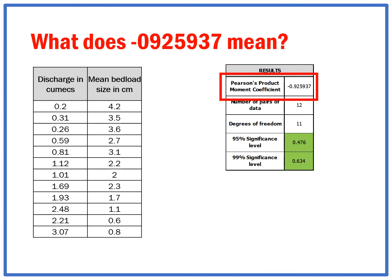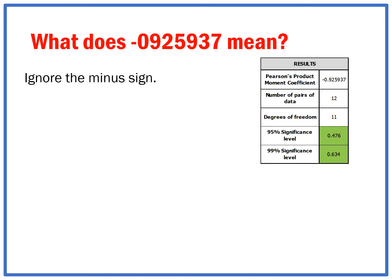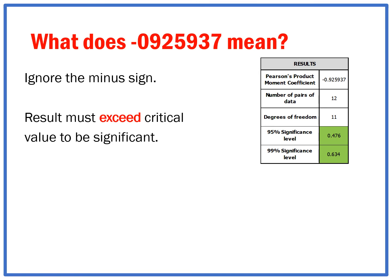So what does this result actually mean? I've got 12 sets of data, 11 degrees of freedom, and both boxes turned green. If I had my graph here of perfect negative relationship and perfect positive relationship, my result falls almost at a perfect negative relationship. That means as the discharge increases, the mean bed load size decreases.